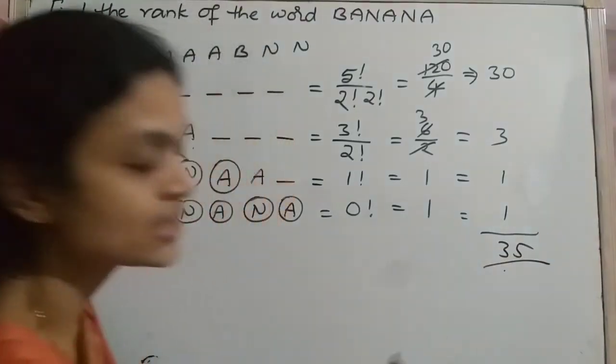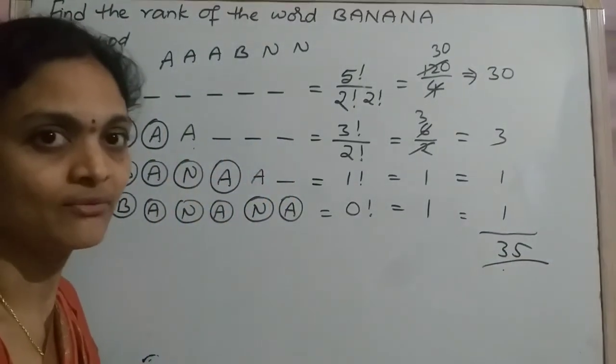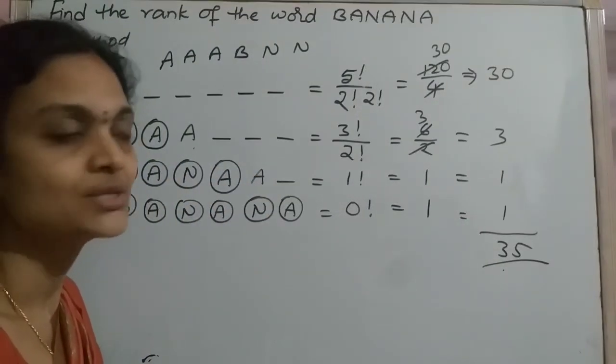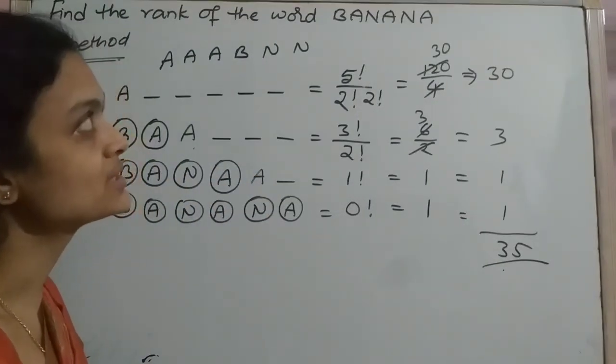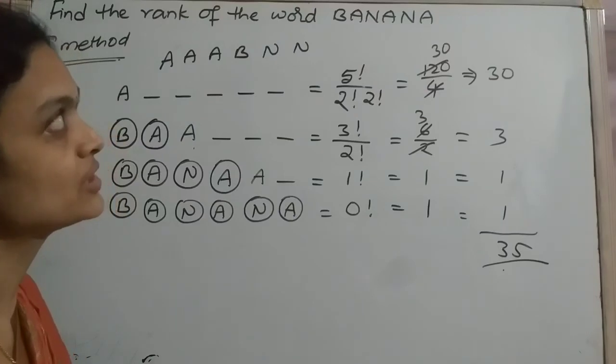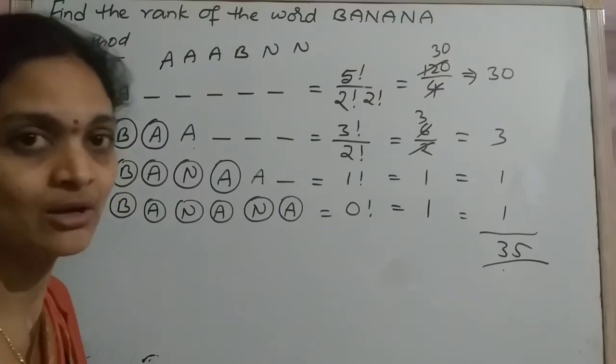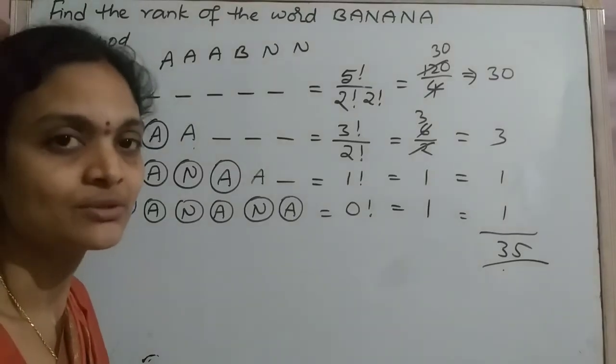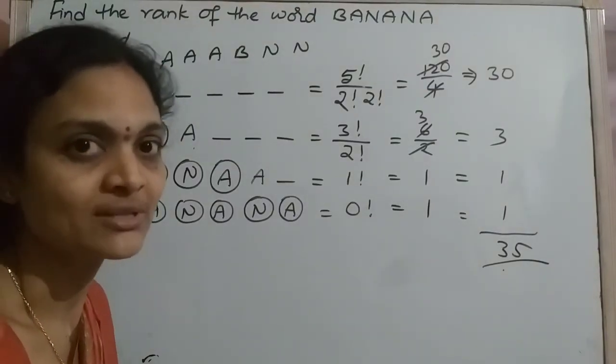So the rank of BANANA is 35. This is the rank of BANANA when repetition is allowed. Thank you for watching.